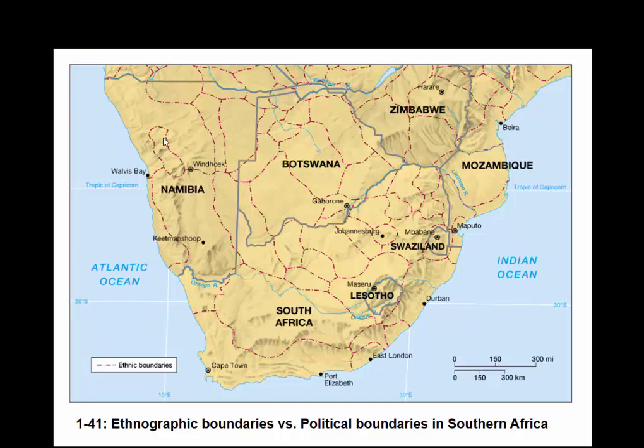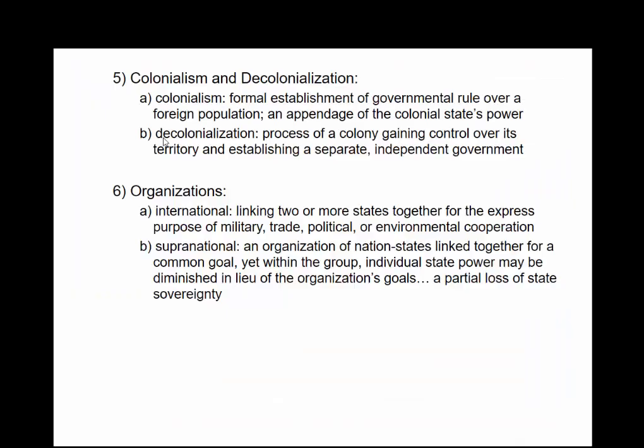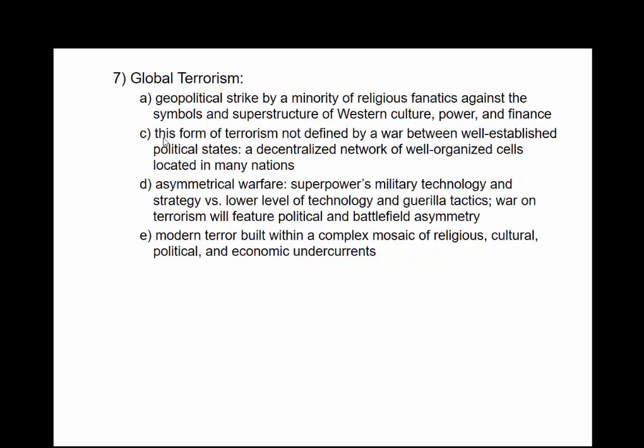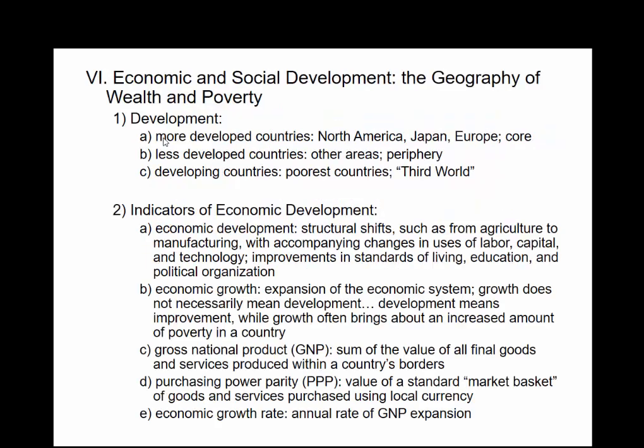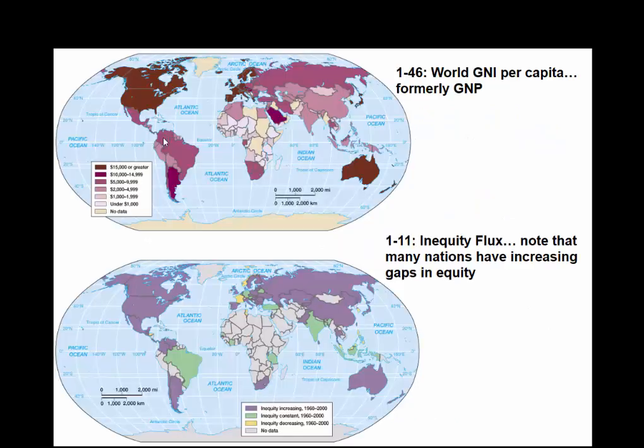We have borders, including ethnographic borders. One of the historical issues is that people have drawn borders with little regard to ethnographic divisions — many different culture groups just placed within them. You can see this in Sub-Saharan Africa with Namibia, Botswana, South Africa, Zimbabwe, and Lesotho. Colonialism, global terrorism, and economic and social development — wealth and poverty — are covered. One indicator is GNI or GNP (gross national income): the total value of incomes and goods for a country divided by number of people.